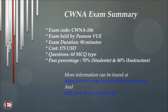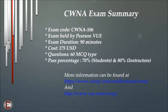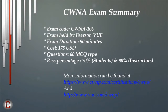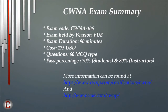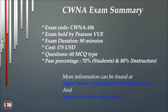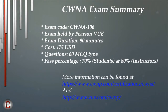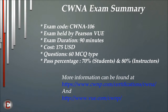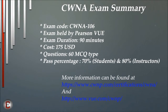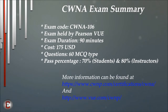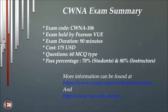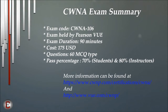As you can see on the screen, I've listed out the most basic information on the CWNA exam and certification. The exam code is CWNA-106. The exam is held by the Pearson VUE Testing Center. The exam duration is 90 minutes and there are about 60 multiple choice questions. The cost for the certification is $175 US dollars — please check the latest pricing on the CWNP website before attempting the exam. The pass percentage is 70 for students and 80 for instructors. More information can be found at the CWNP website in the CWNA section.